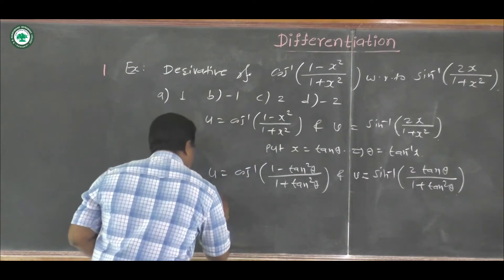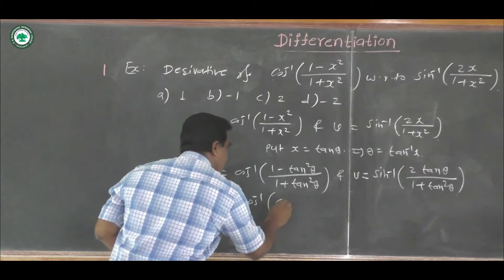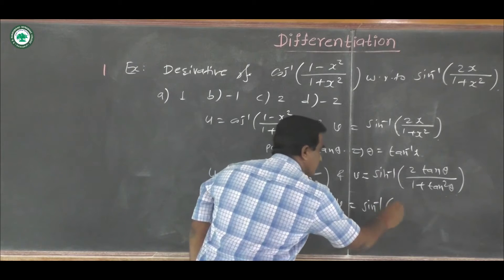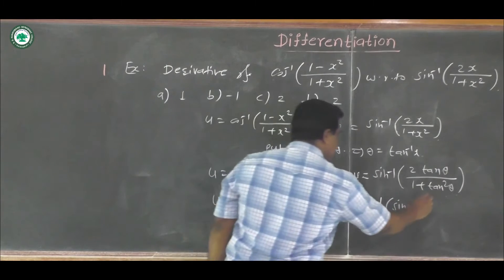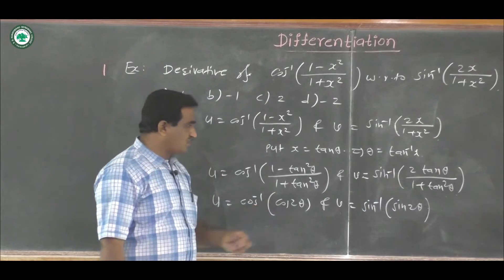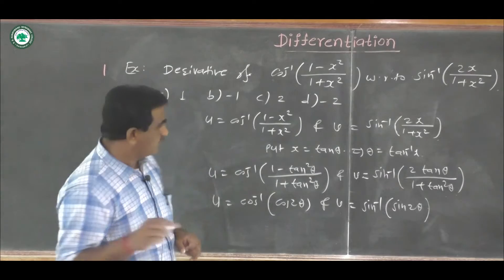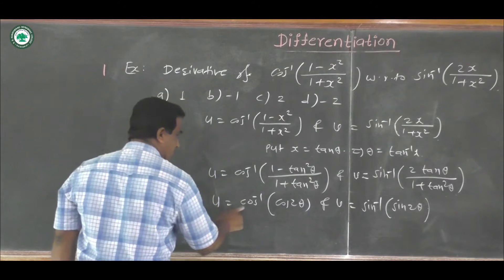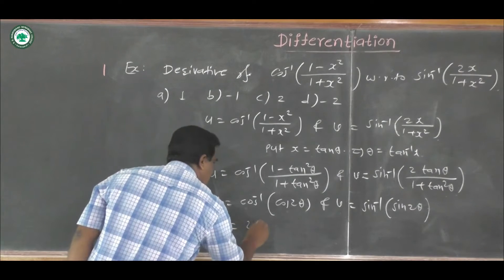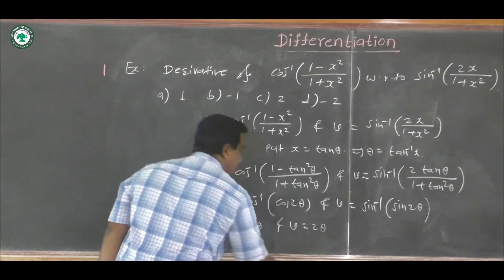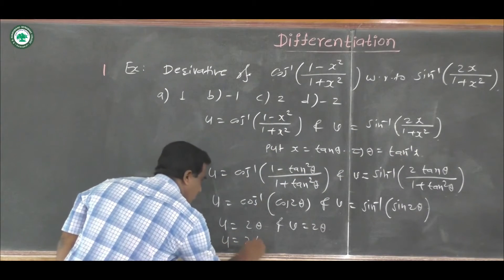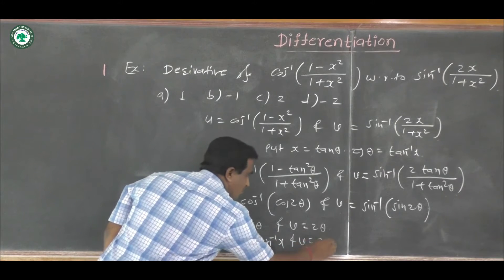Using these two formulas, we can write u equal to cos inverse of cos 2 theta, and v equal to sin inverse of sin 2 theta. Now, using the formula that cos inverse of cos x equals x and sin inverse of sin x equals x, we get u equal to 2 theta and v equal to 2 theta. Substituting back theta equal to tan inverse x: u equals 2 tan inverse x and v equals 2 tan inverse x.